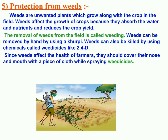The next but very important step is protection from weeds. Undesirable plants that grow naturally along with the crop are called weeds. Removal of weeds is called weeding. Farmers remove weeds by tilling before sowing, manually removing them using a khurpi, or by spraying chemicals such as 2,4-D, naphthalene acetic acid, and atrazine. Weeds affect crop growth by absorbing water and nutrients from the soil, reducing crop yield.